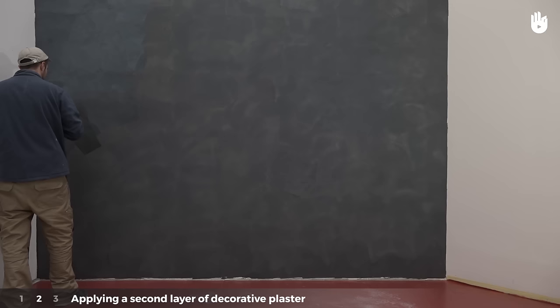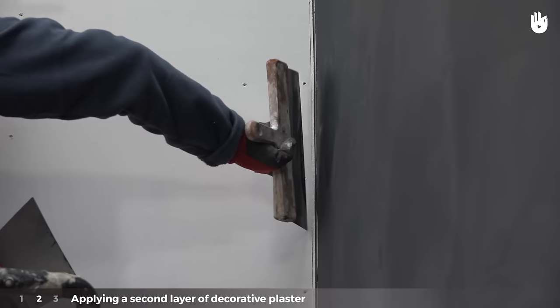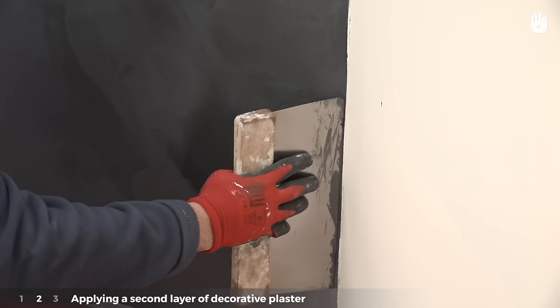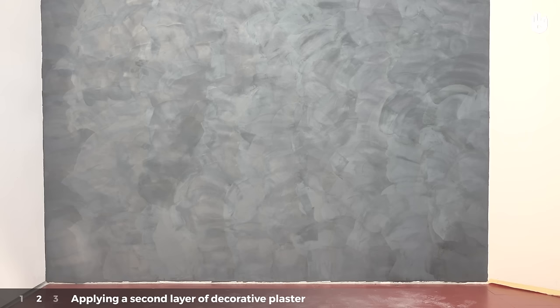Once the first layer is dry, apply the second. The second layer should be applied from the top to the bottom in semi-circles exactly as you did the first time. At this stage however, the plaster needs to be perfectly smooth and have no stroke marks between the strips.